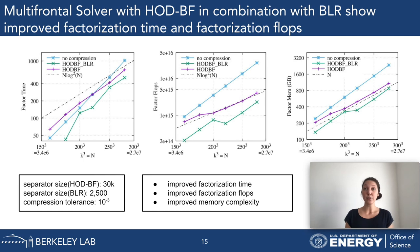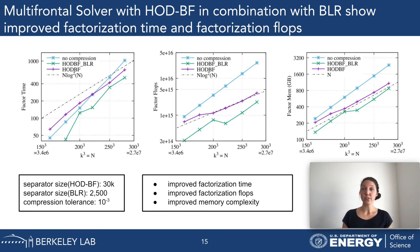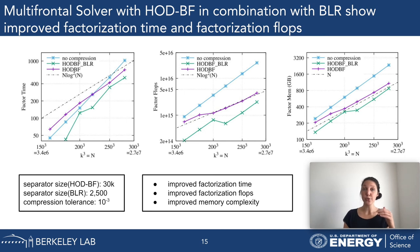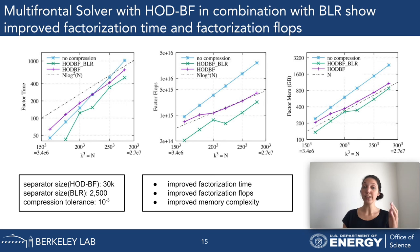What exactly did we change? We included the block-low-rank format and increased the separator size for HODBF. Now all frontal matrices corresponding to a separator size of 30,000 or more are compressed by HODBF, everything between 2,500 and 30,000 is compressed with block-low-rank, and everything below 2,500 is not compressed.